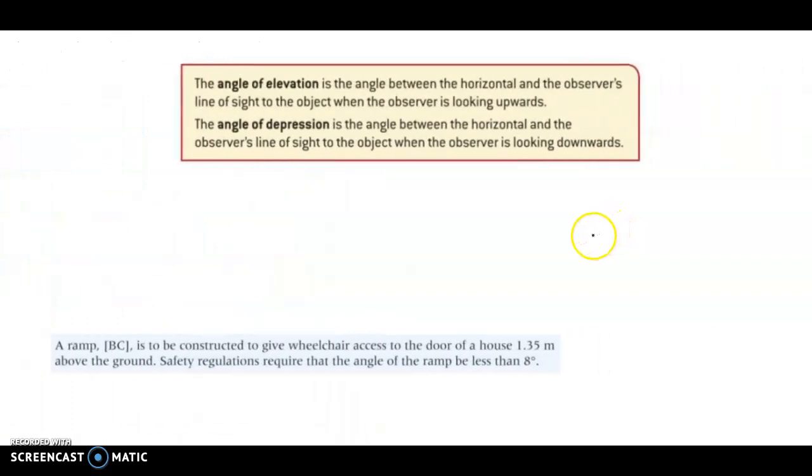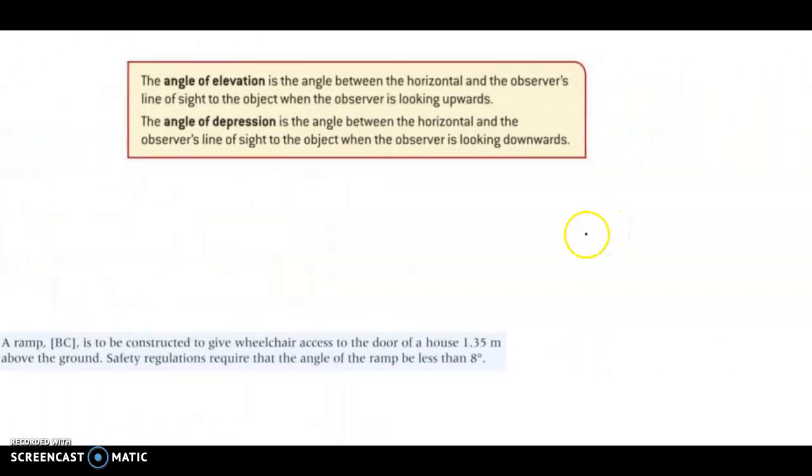So here is that in text. The angle of elevation is the angle between the horizontal and the observer's line of sight. So if you have to look up, then you're making an angle of elevation. You're looking up at a tree, you're looking up at the top of a building, a telephone pole, a mountain. Anything that's looking up is an angle of elevation.